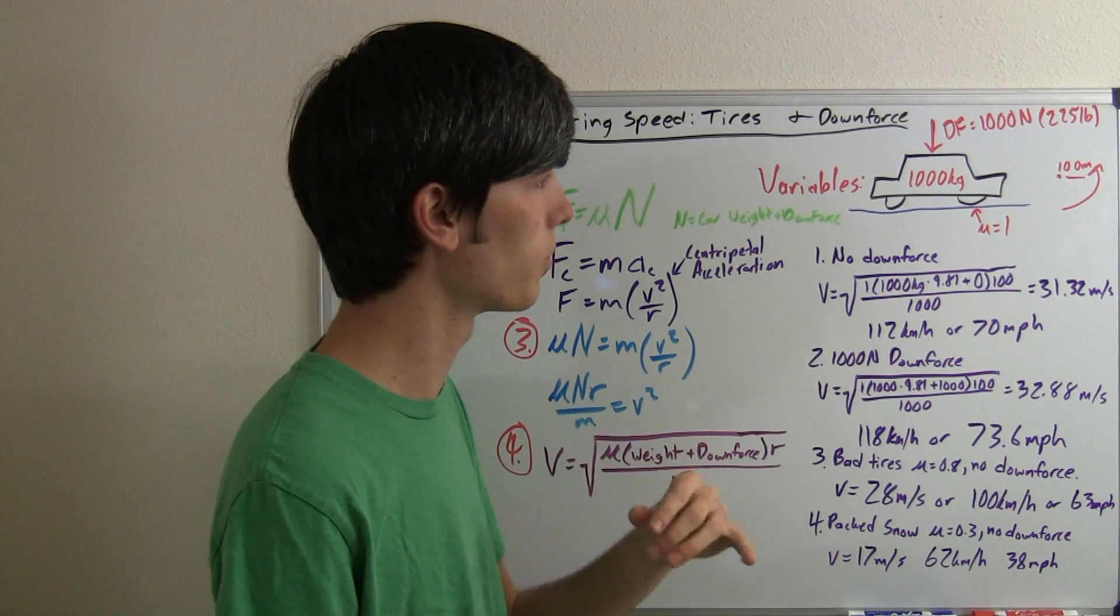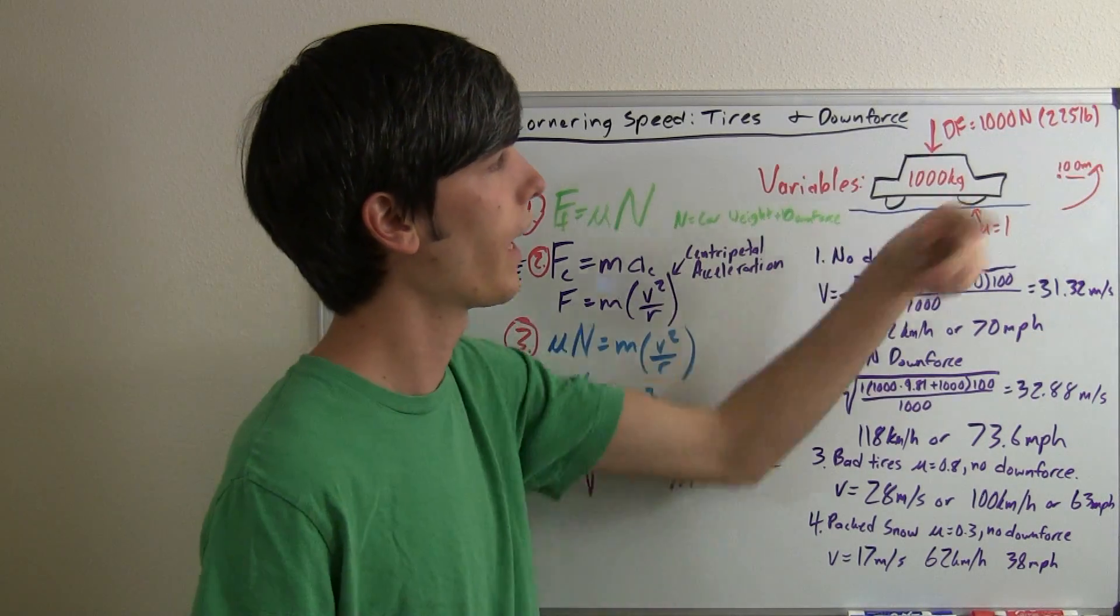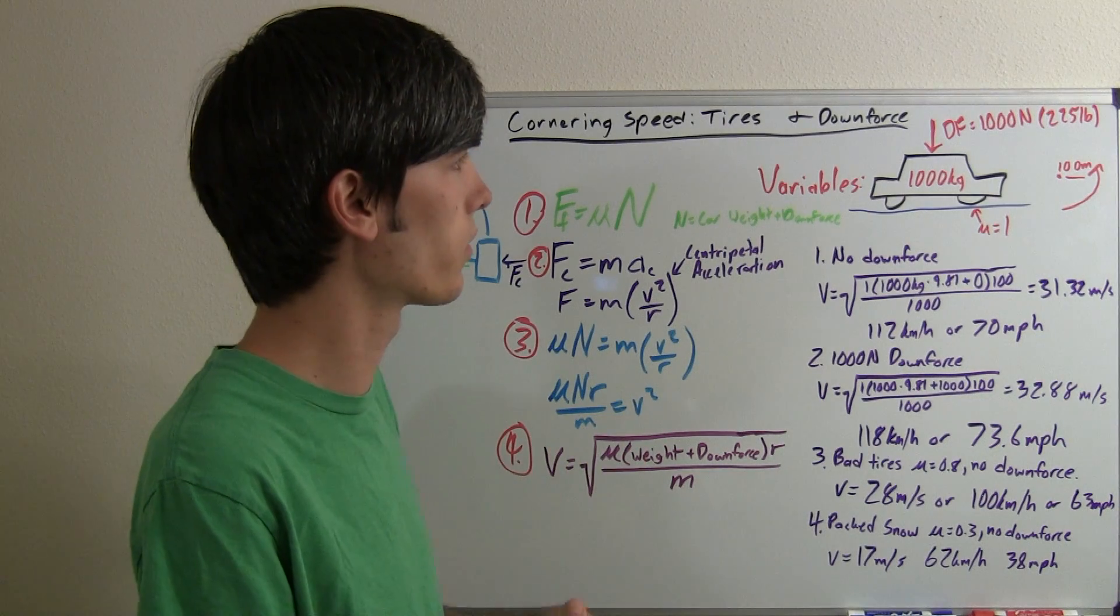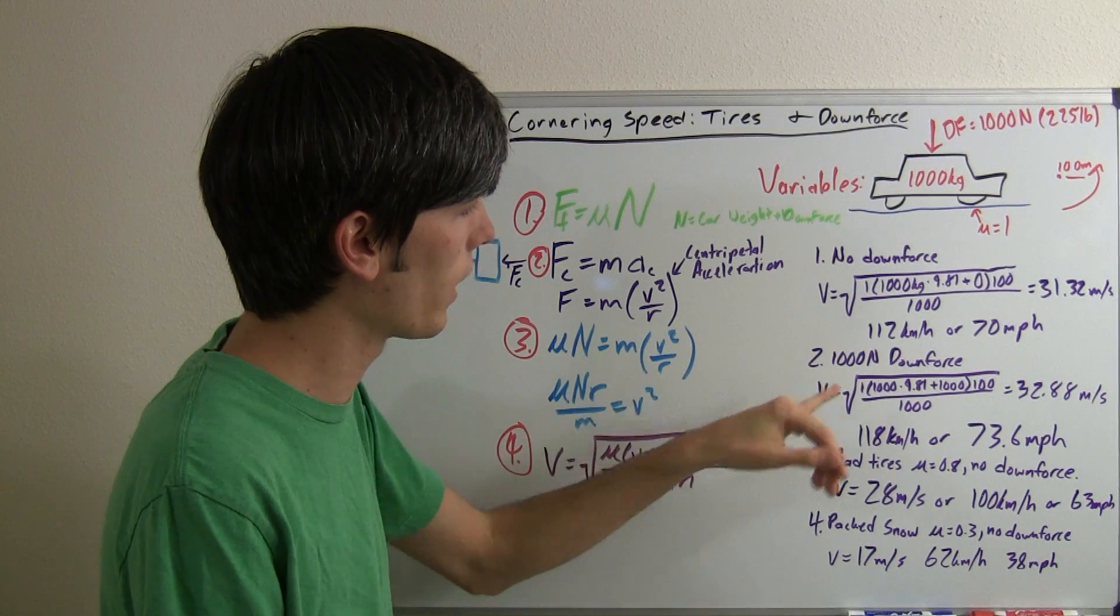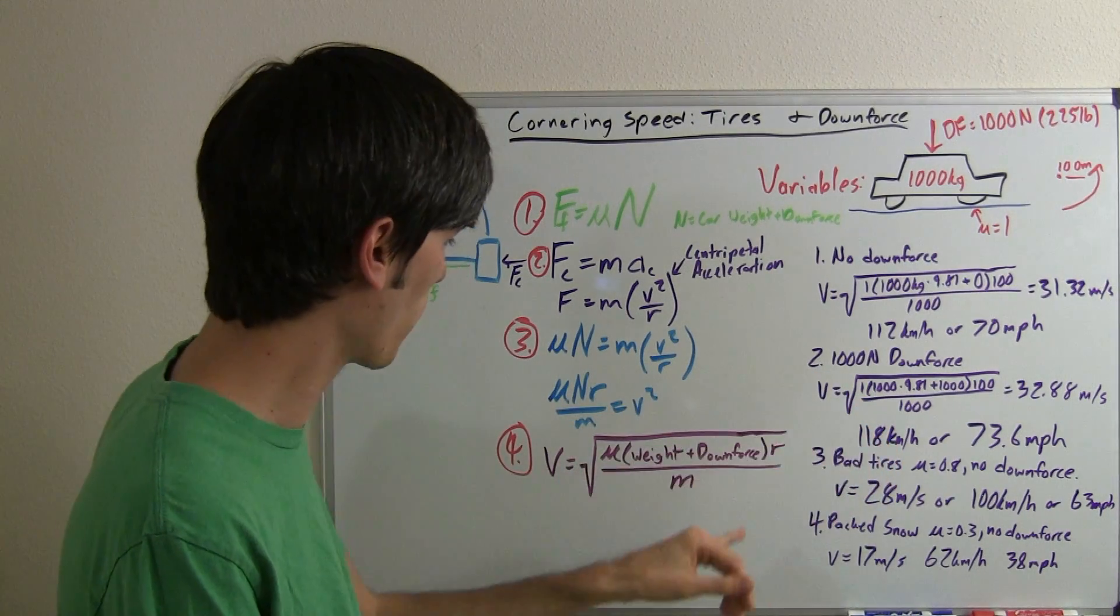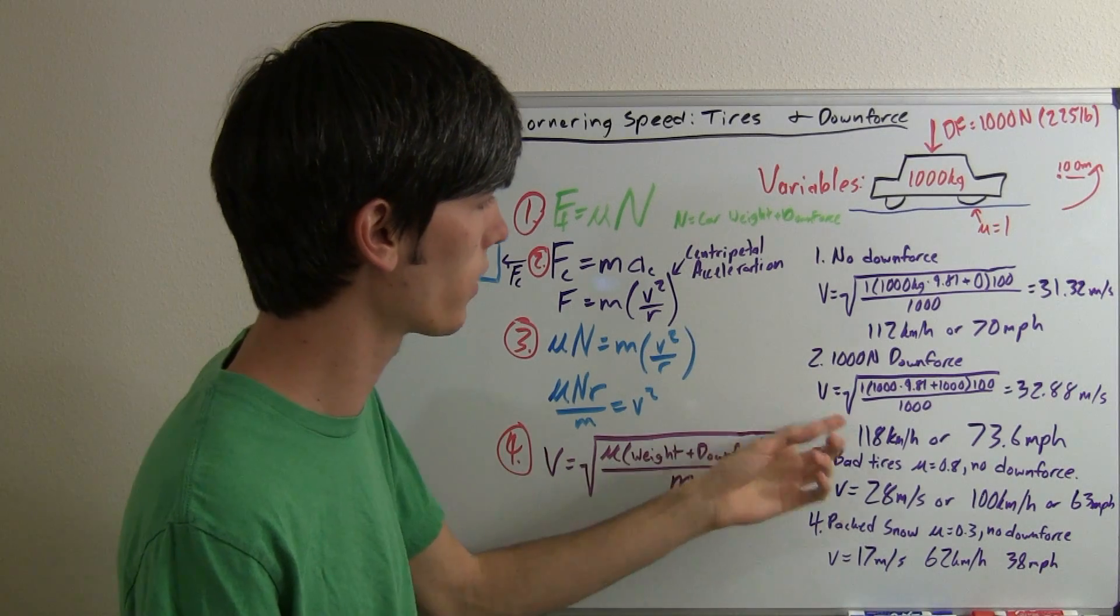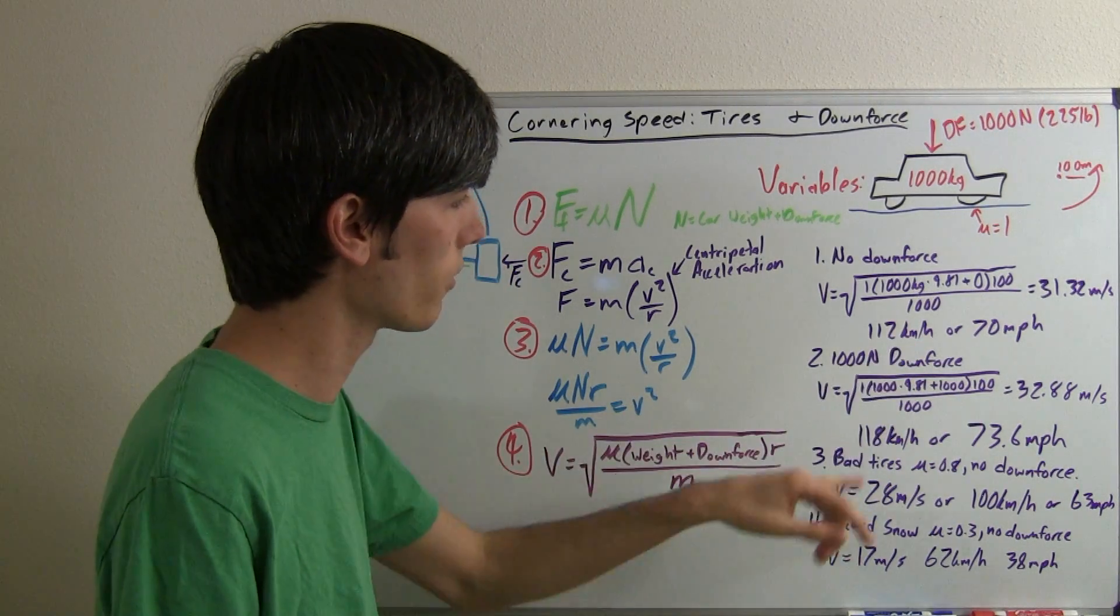Now let's add in some downforce. So, we're going to say it's at the maximum downforce that it can achieve, and that's at 225 pounds or 1,000 newtons, and that's at some certain speed. So at that speed, we're going to plug in all of our variables, and we're going to see what speed exactly could this go if it was producing 1,000 newtons of downforce?